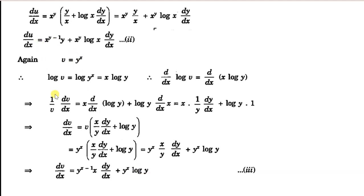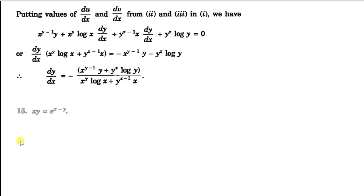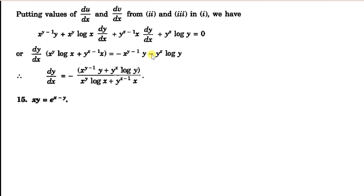Now we put the expressions for du by dx and dv by dx into the first equation. We get x raised to y minus 1 times y plus x raised y times log x times dy by dx, plus y raised x minus 1 times x times dy by dx plus y raised x times log y equal to 0. Transposing other terms to the right hand side and taking common, we get the final expression for dy by dx.